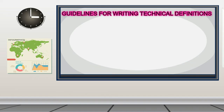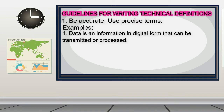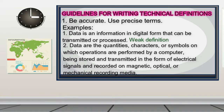Here are the guidelines for writing technical definitions. Number 1: Be accurate — use precise terms. For example, 'Data is an information in digital form that can be transmitted or processed' is a weak definition. A stronger, accurate and precise definition is: 'Data are the quantities, characters, or symbols on which operations are performed by a computer, being stored and transmitted in the form of electrical signals, and recorded on magnetic, optical, or mechanical recording media.'